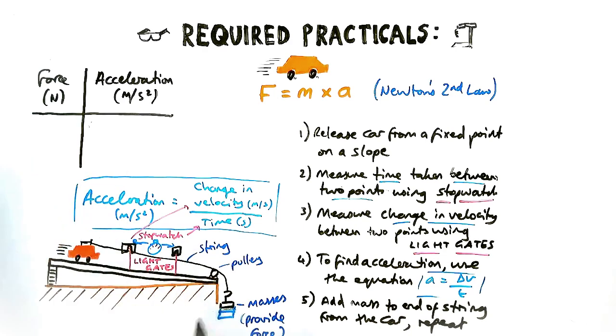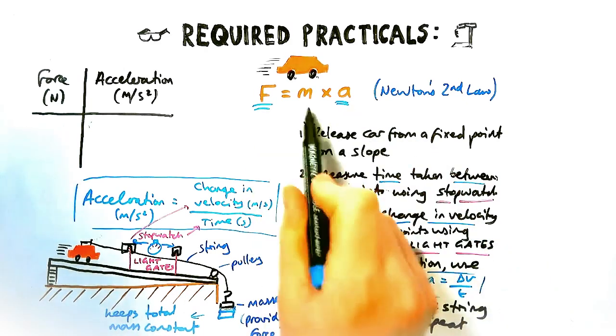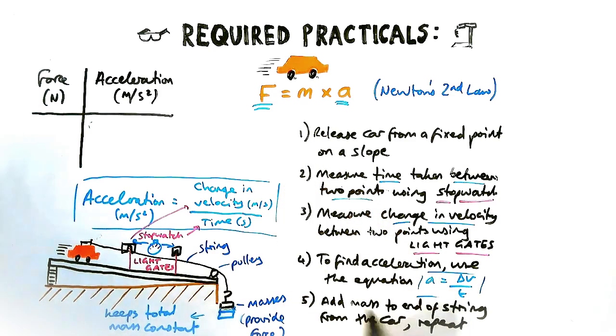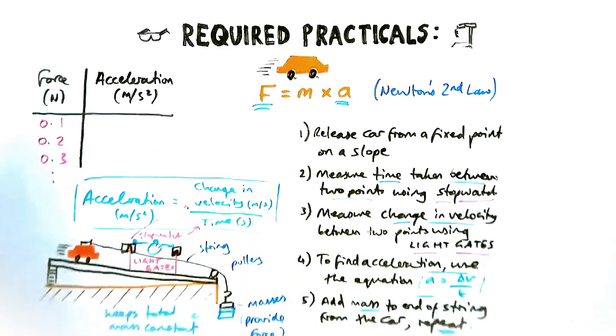When I say from the car, what I mean is the total mass of the system has to be constant. So you take a mass off the car and you put it to the end of the mass hanger, otherwise you're changing the mass of the whole thing as well as the force, which we don't want to do. That's quite a tricky thing to do even when you're doing it practically with the equipment.